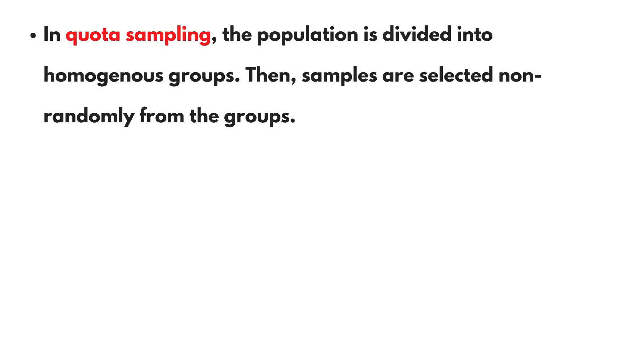In quota sampling, the population is divided into homogenous groups. Then samples are selected non-randomly from the groups.